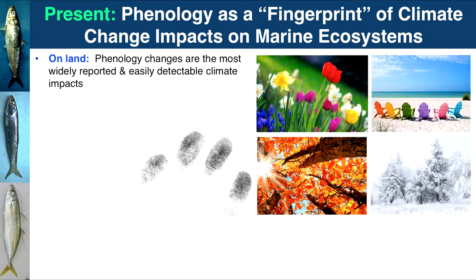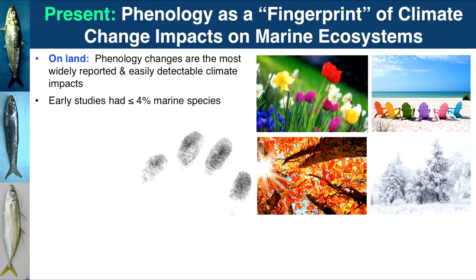On land, we have seen this fingerprint, and phenological changes are one of the most detectable impacts of climate change. However, in marine ecosystems, early global-scale studies left out the ocean, including less than 4% of species in those analyses. Once we started studying this in the ocean, we found that phenology was changing at an average rate of 4.4 days per decade — actually much faster than what's happening on land.